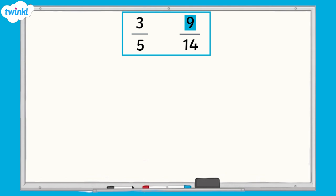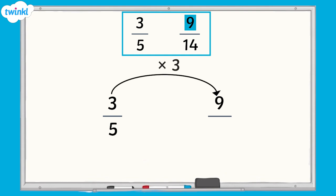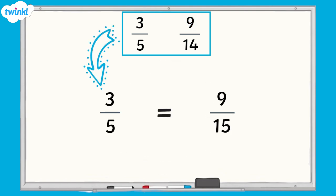Nine is a multiple of three, so I can use nine as a common numerator. I need to find the equivalent fraction of three fifths which has nine as a numerator. I know that three multiplied by three equals nine, so I must apply the same rule to the denominator. Five multiplied by three equals fifteen. Therefore, the equivalent fraction to three fifths that has nine as a numerator would be nine fifteenths.